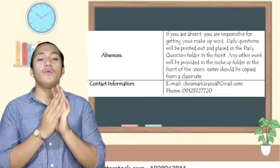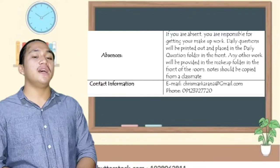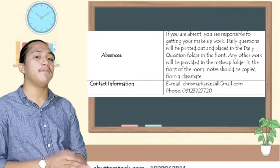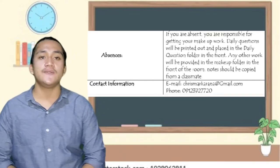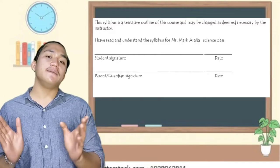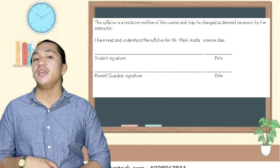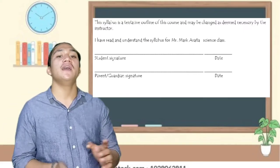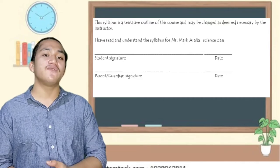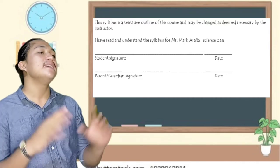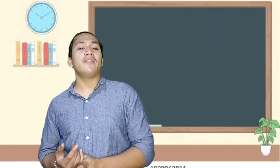My contact information: if you want to contact me, my email is chrismarkaranya@gmail.com with contact number 639123927720. Again, 639123927720. This syllabus is a tentative outline of this course and may be changed as necessary by the instructor. I have read and understand the syllabus for Mr. Mark Aranya's science class, signed by the student. That's our syllabus.